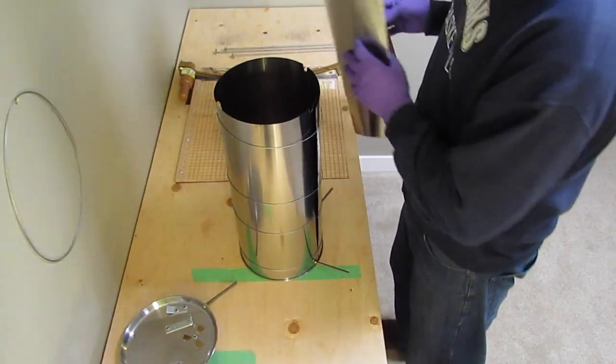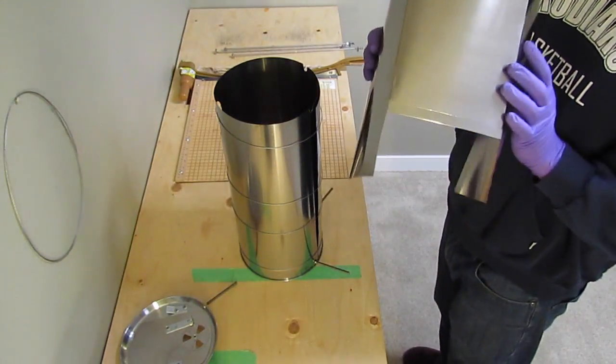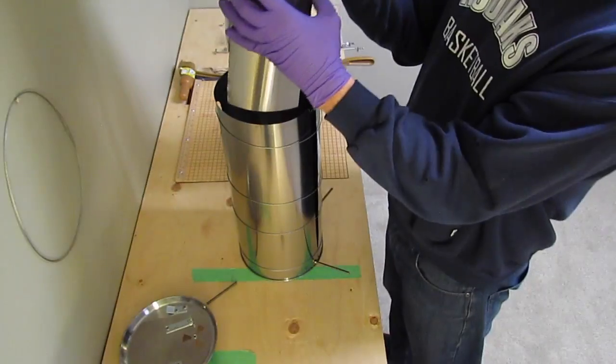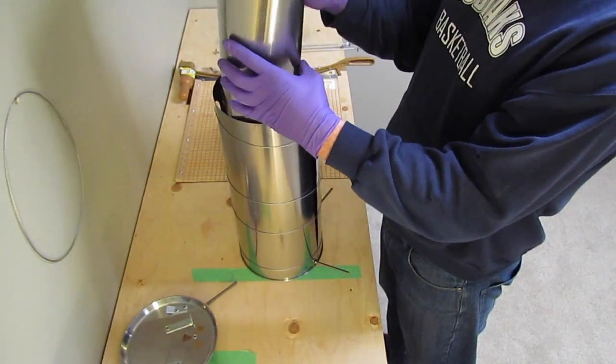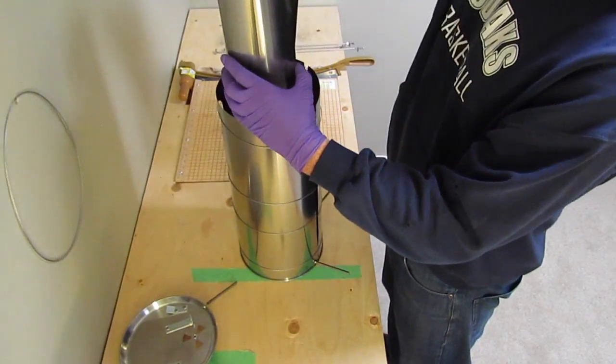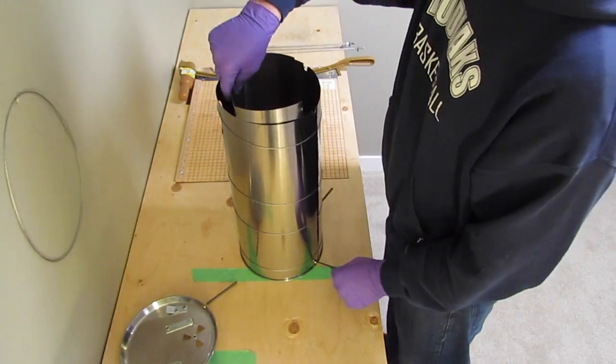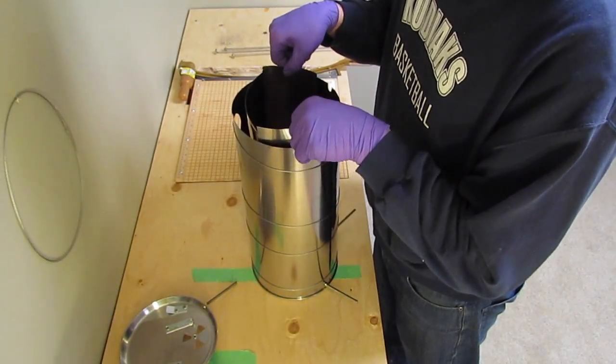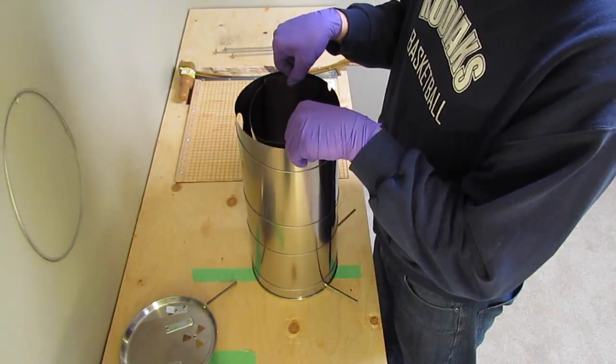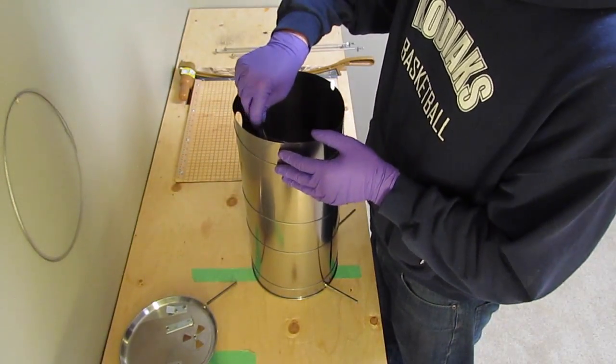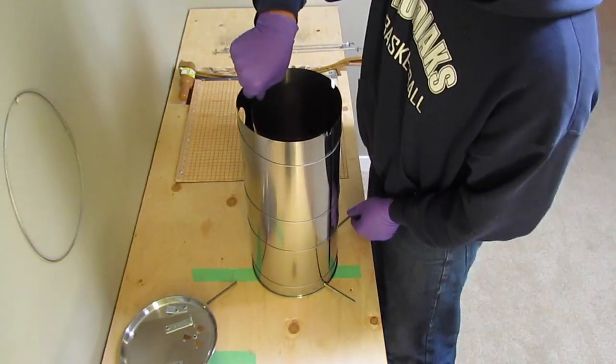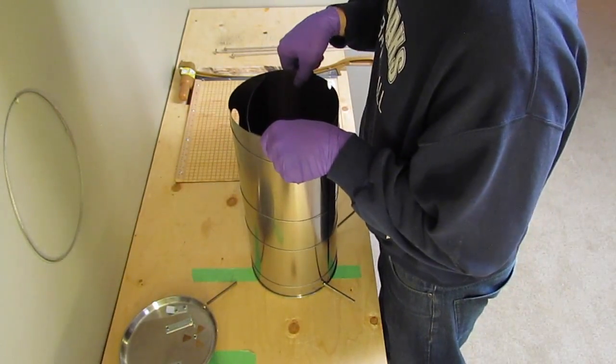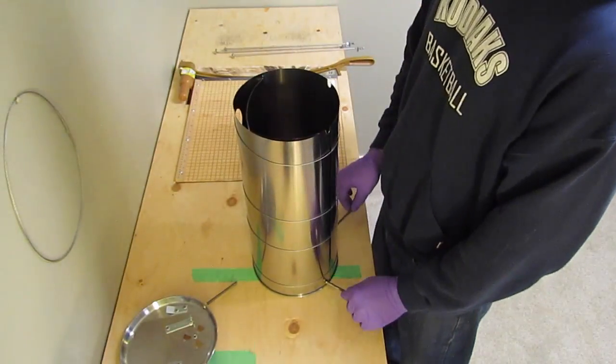And when we install the baffle, we're going to install that large opening to the bottom, towards the back of the stove, and it's just going to fit right inside the body. And you just want to make sure that it sits in between the plate itself and the stove body. And it should just fit right in there, like so.